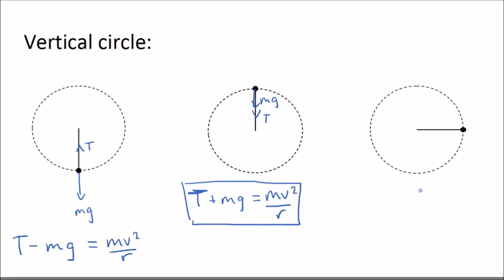And finally at the side, the only force acting inwards towards the centre of the circle is T the tension. And what about the weight now? Well the weight still acts downwards. And because it's at a right angle it's perpendicular it will not contribute towards the centripetal force. So here it's simply T equals mv squared over r.